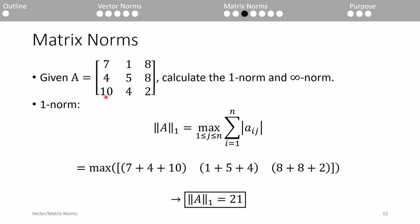Here's a quick example of the matrix 1-norm. We take the sum of each column in the A-matrix, so we end up with 7 plus 4 plus 10 in the first column, 1 plus 5 plus 4 in the second column, and 8 plus 8 plus 2 in the third column. This gives us 21, 10, and 18. The largest of these three sums is 21, which is the column-sum norm.